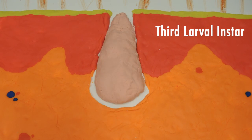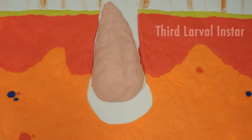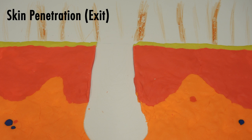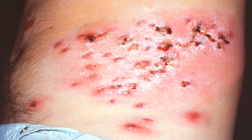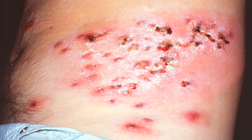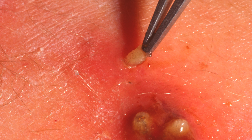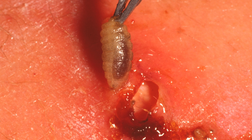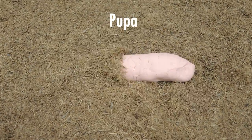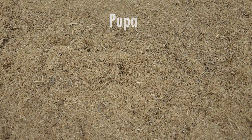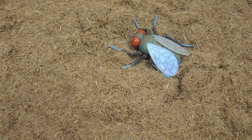These are some pictures of a patient my dad published in the Archives of Dermatology. The third-stage larva fall to the ground, pupate, and develop into adult flies, completing the life cycle.